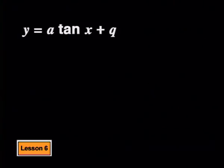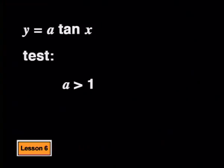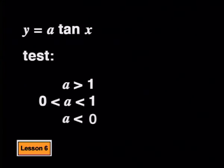Let's start by changing the a value in the parent tan graph and keeping q equal to zero. We want to choose a few values for a and then see how each of them will change the parent graph. Then we can use these examples to see if we can generalize about the effect of a on the graph. It's useful to test an a value greater than one, another a value that is a fraction between zero and one, and also negative a values.